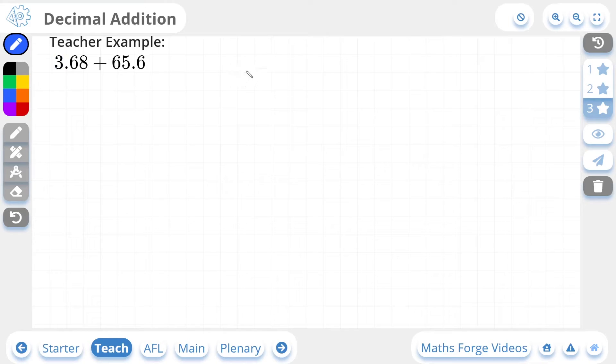We'll do one more three-star example. So we have 3.68 plus 65.6. So the 6 is in the tens column and goes here. The 5 is in the units and goes here. And then we have 0.6. And we're adding these together.